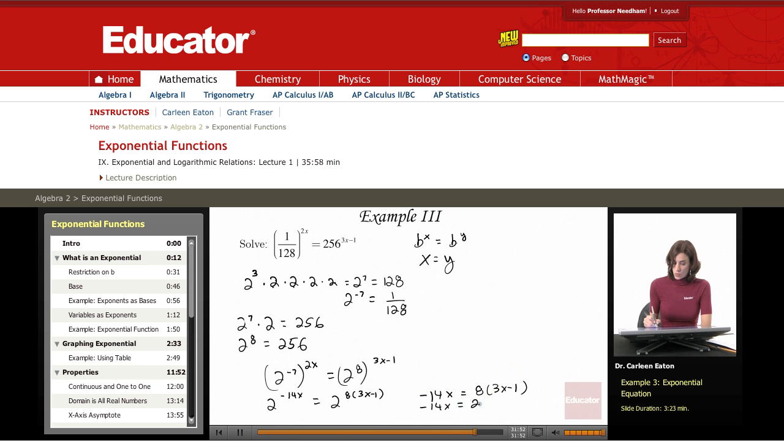Negative 14x equals 24x minus 8. I'm going to add 14x to both sides to get 38x.